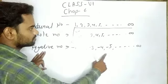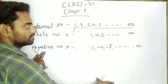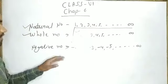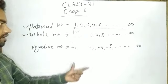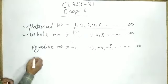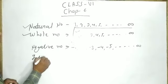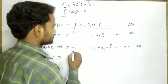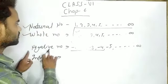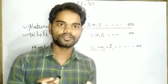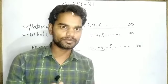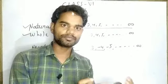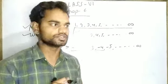All these numbers are called negative numbers. The corresponding opposite numbers of natural numbers are called negative numbers. The next topic is integers. What are the integers? If we include negative numbers and whole numbers together, the group of negative numbers and whole numbers is known as integers.